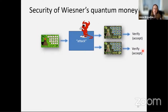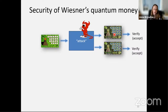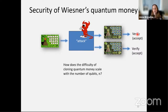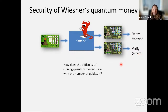For Wiesner's quantum money, we had an informal security argument. In terms of the game, we formalize it: we have a quantum banknote, an attack by a pirate trying to counterfeit it, and the attack creates two quantum systems — pirated versions of the quantum money. Then we have a verification procedure which is to verify in the known basis. The scheme is secure if we can bound the probability of making both verifiers accept, which would correspond to taking one banknote, attacking it, and creating two accepted banknotes — doubling your money.